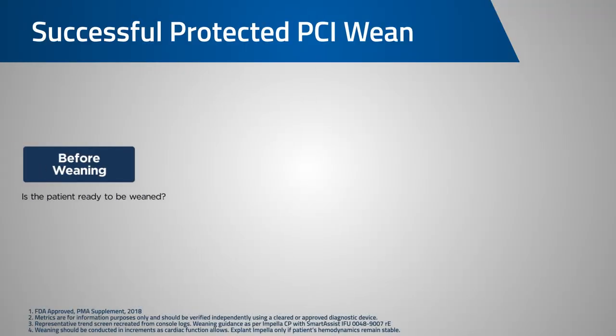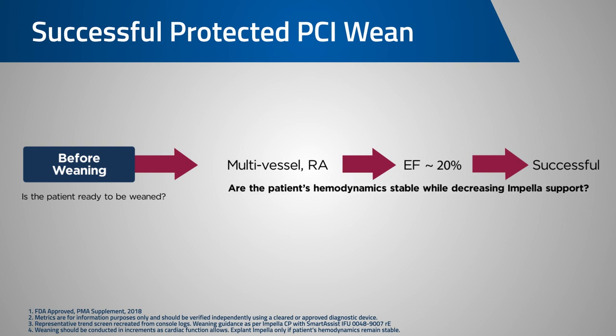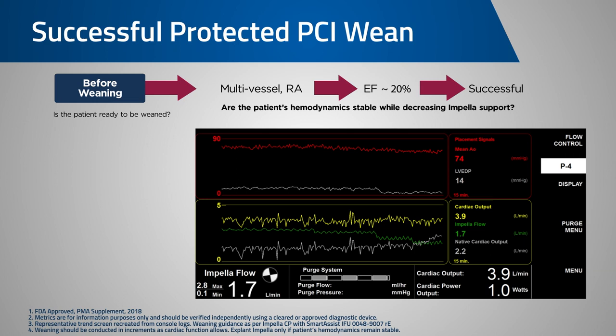Before weaning the Impella catheter, patient presentation and current condition should be considered. The patient in this example presented with a low EF, and the revascularization was successfully completed. Once the clinical decision has been made to wean the Impella catheter, the trend screen can be used to observe trends while the Impella support is decreasing.